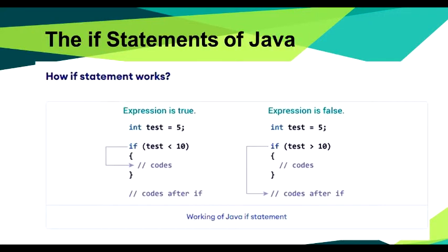Now let us see how the if statement works. In this expression, the variable int test is equal to 5. If this condition is true, the code inside the first block will execute. In the second expression, if test equals 5 and if test is greater than 10 — if the first condition is false, then the second expression will be true. If the second condition is true, then the first expression will be false. This is how the if statement works.